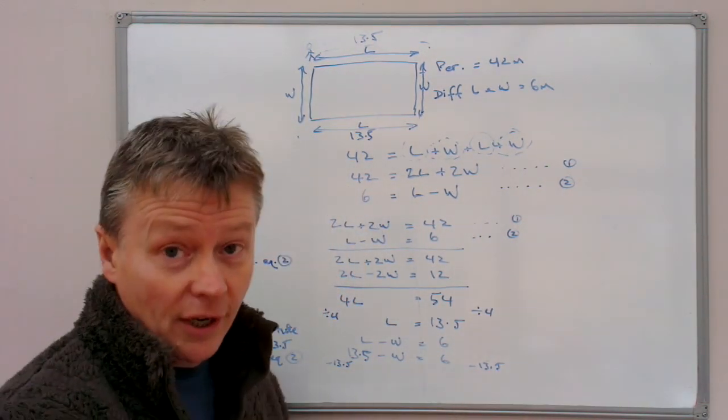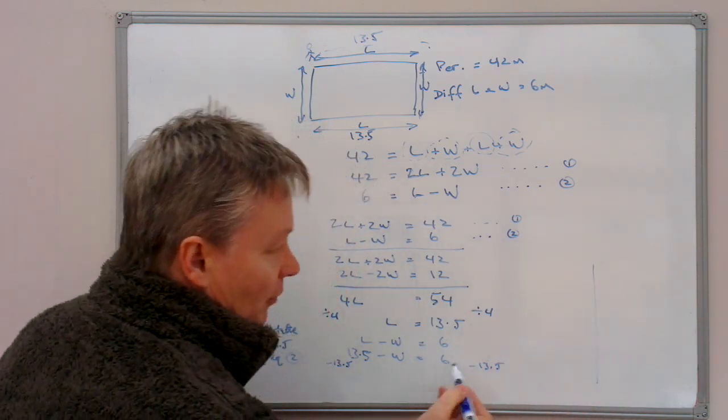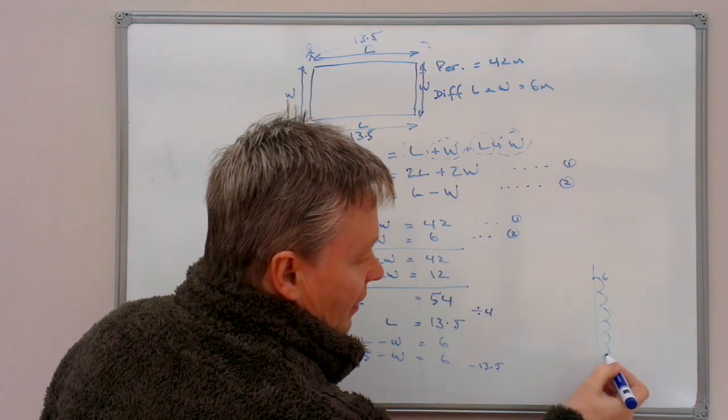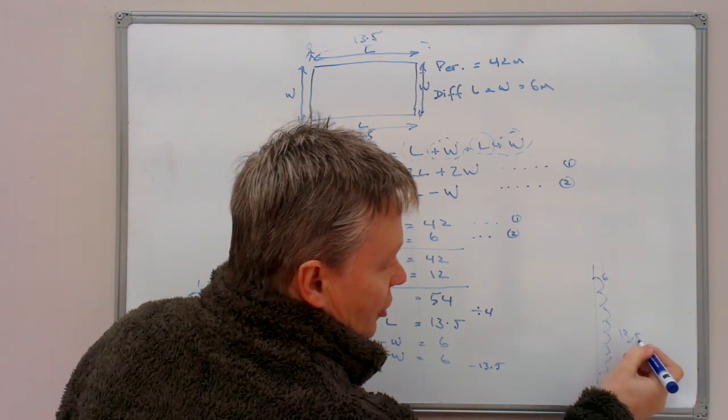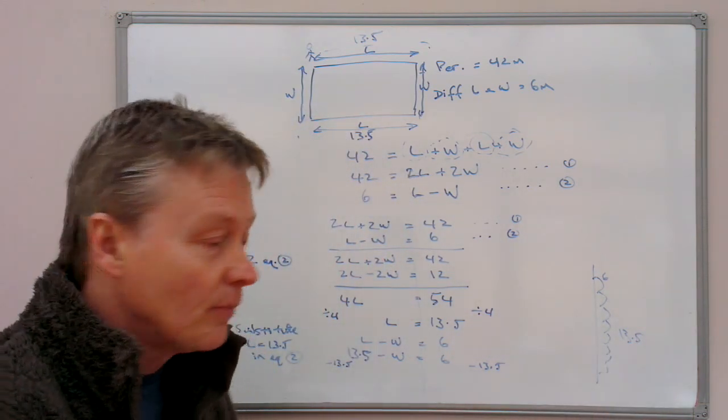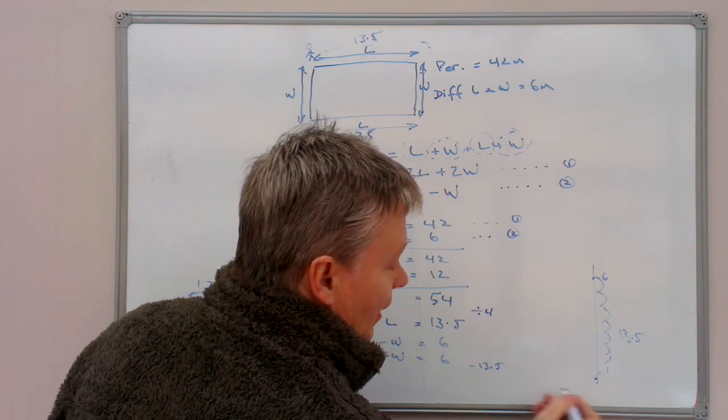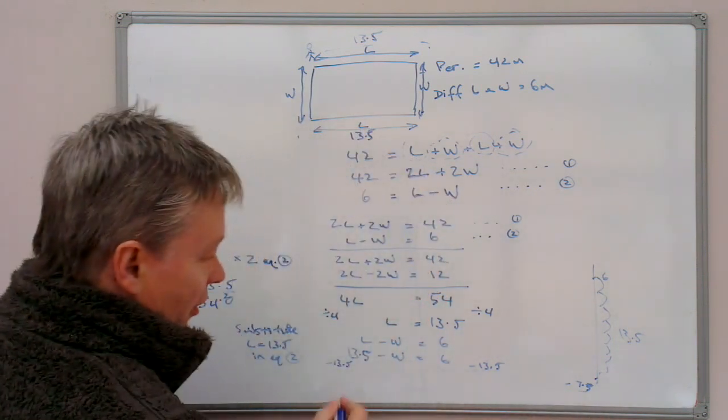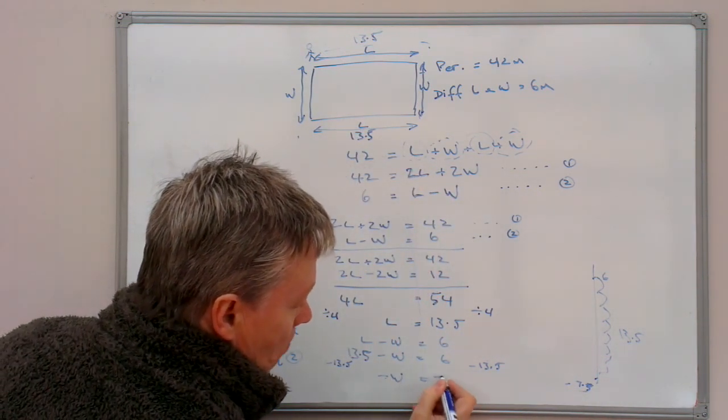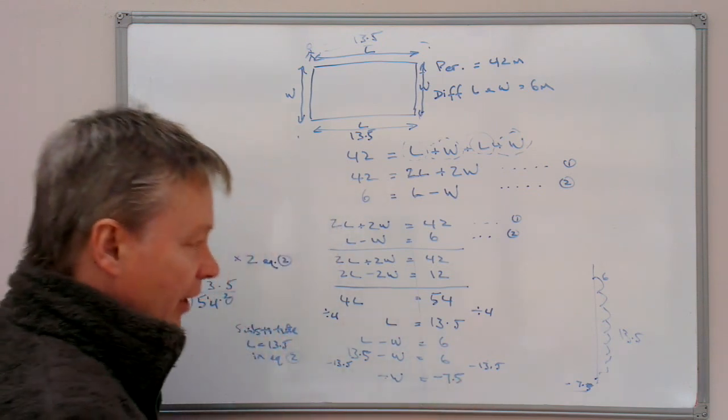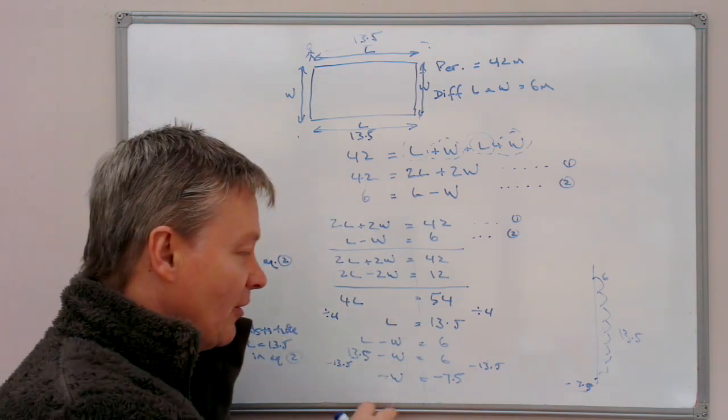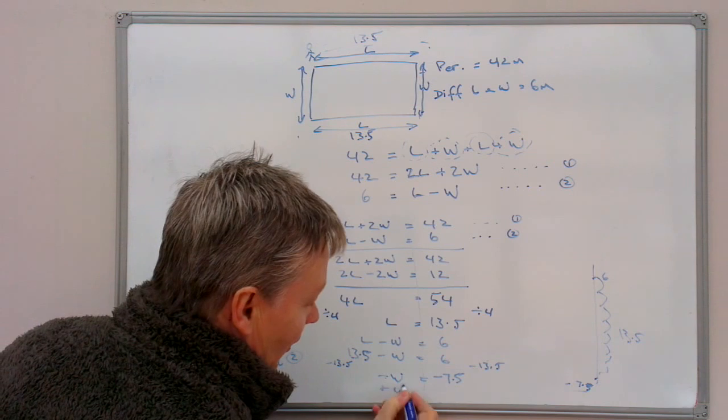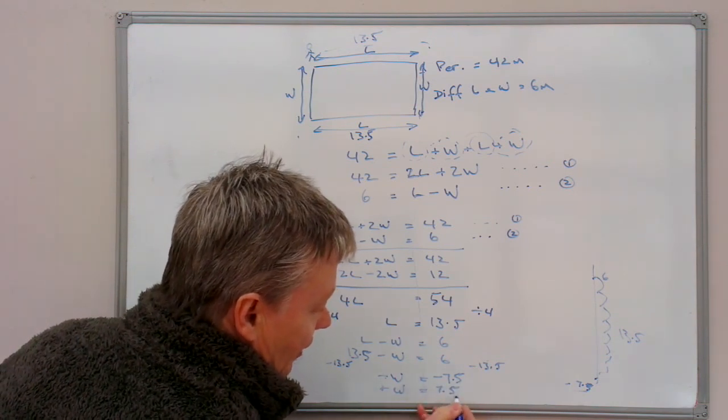So it's a little bit like a number line if you like. What I have got is at the top here I've got positive 6. And then I'm going to come down 13 jumps or 13.5 jumps. And when I come down 13.5 jumps, that's going to give me a value here of minus 7.5. So in other words, minus W equals minus 7.5. Well if a minus W equals a minus number, then a positive W will equal 7.5 positive.